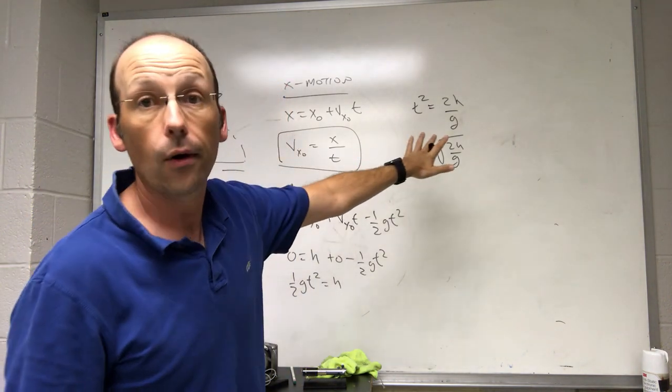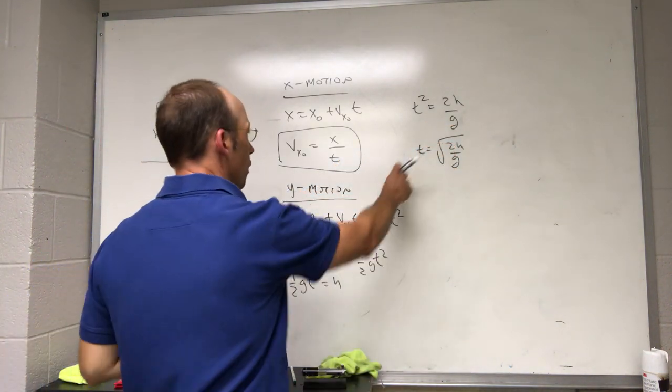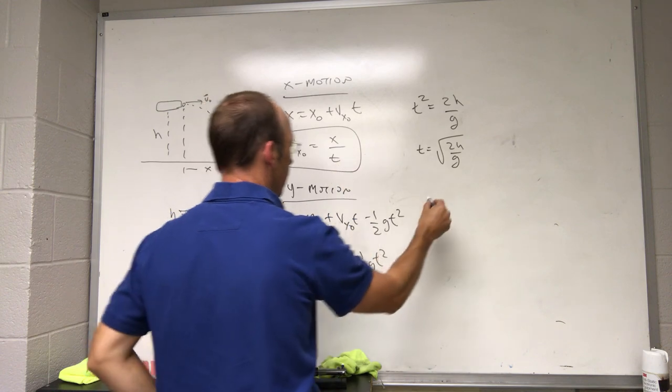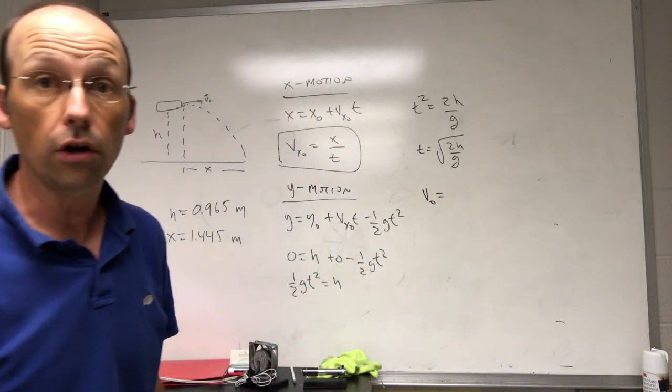So, I can find the time, plug it in here. I'm going to go ahead and do that. I'm not even going to find the time. You can find the time, but I'm just going to plug it in. So, if I put this expression for t in here, I get v0, which is, I'm just calling it the total launch velocity.